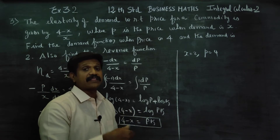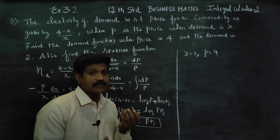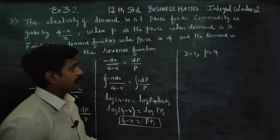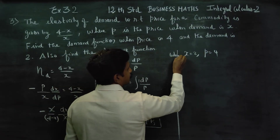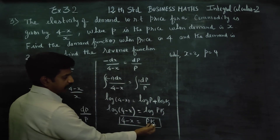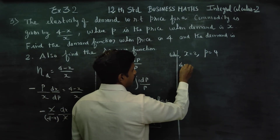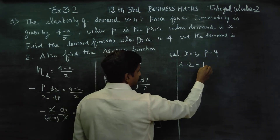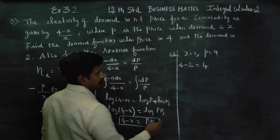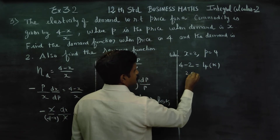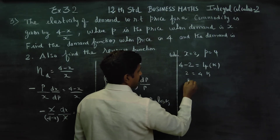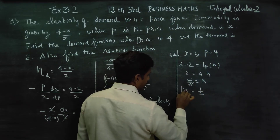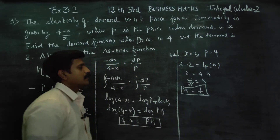So if you look at the elasticity of demand: when x is equal to 2 and p is equal to 4, substitute p equals 4. Then k is equal to... substituting p equals 4, we find 2 divided by 4 is equal to k. Cancelling, k is equal to 1 by 2.